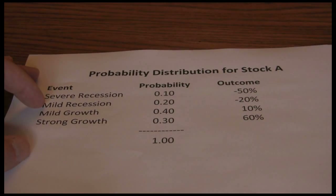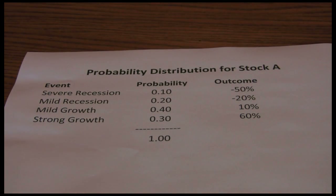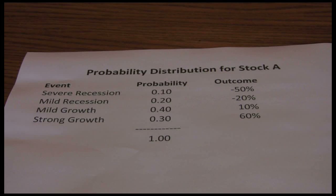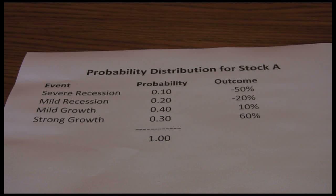Going back to the idea of the probability distribution as a whole — now that we've talked about what it is and what each component means — probability distributions are not meant to be exact. They're a ballpark estimation. We don't know exact probabilities or exact outcomes. Maybe in a severe recession the stock actually loses 70%, or maybe only 30%. I don't know any of that ahead of time. So I'm just forecasting what might happen, and my probability distribution is not precise — it's an educated guess giving me a framework to work with.